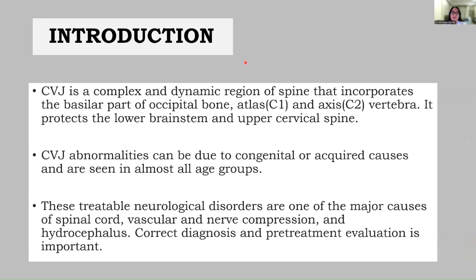Introduction. CVJ is a complex and dynamic region of the spine that incorporates the basilar part of the occipital bone, atlas, and axis vertebra. It protects the lower brainstem and upper cervical spine.